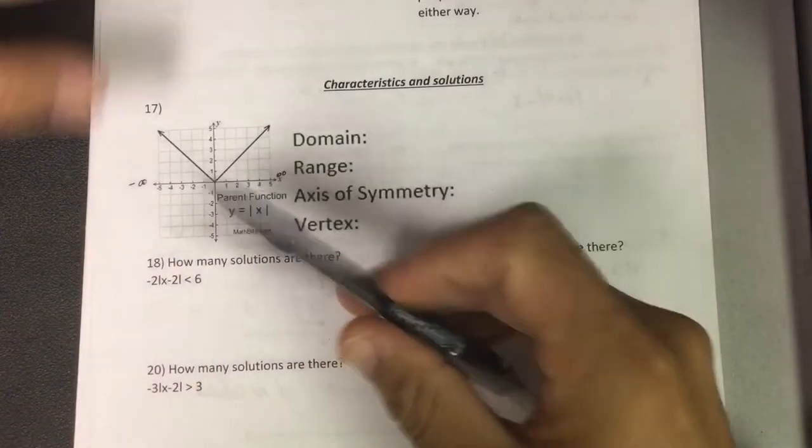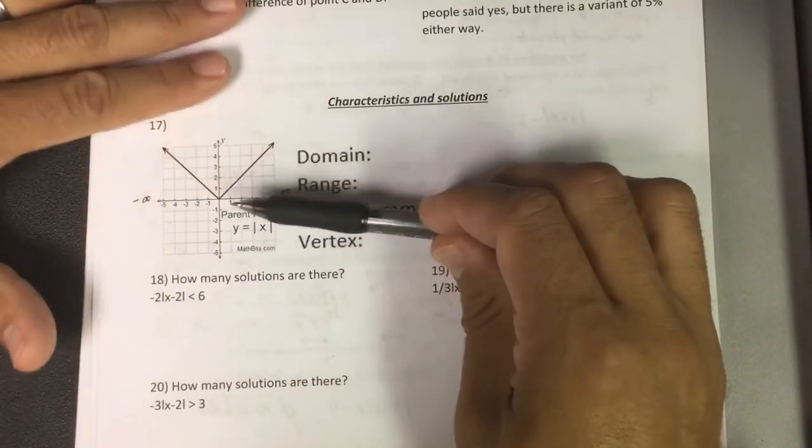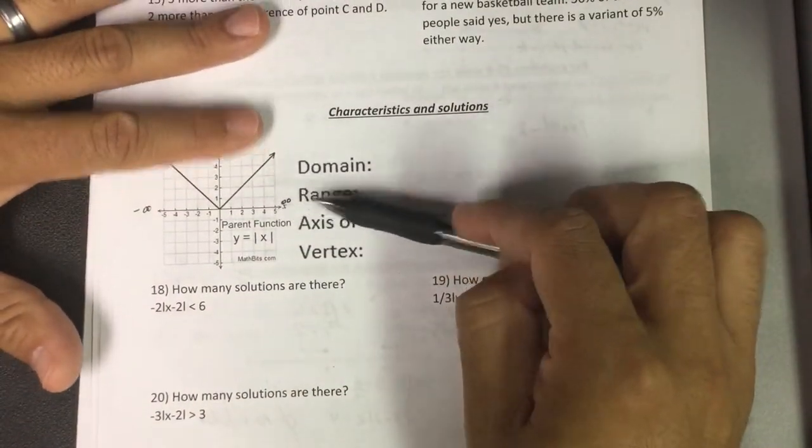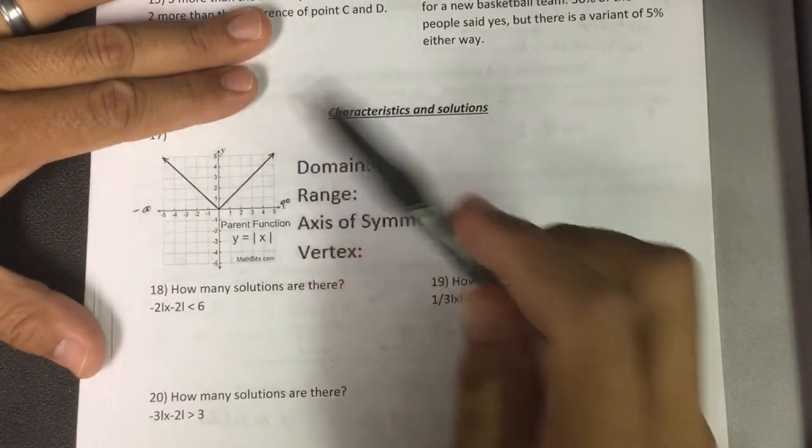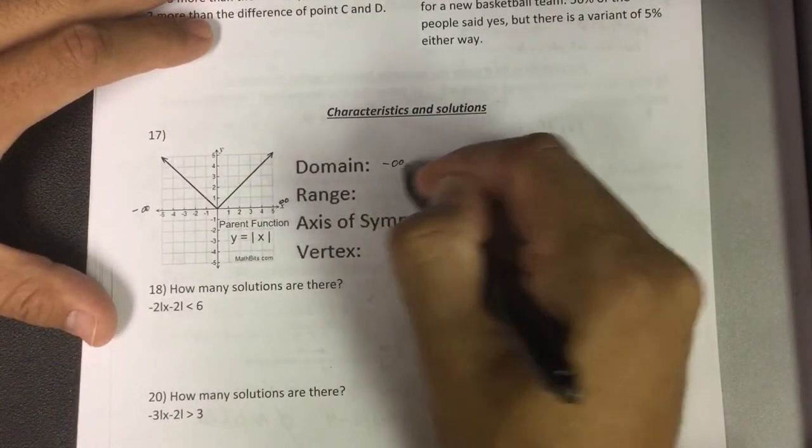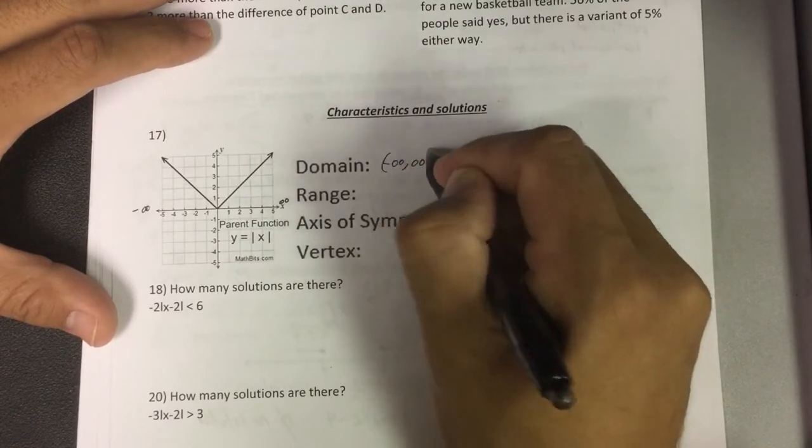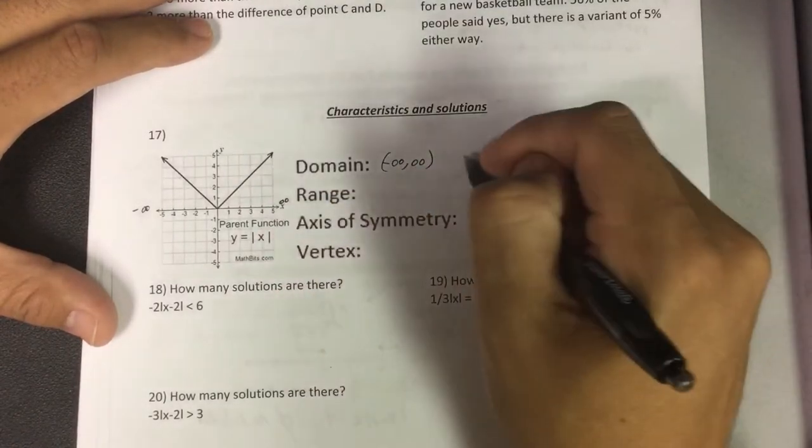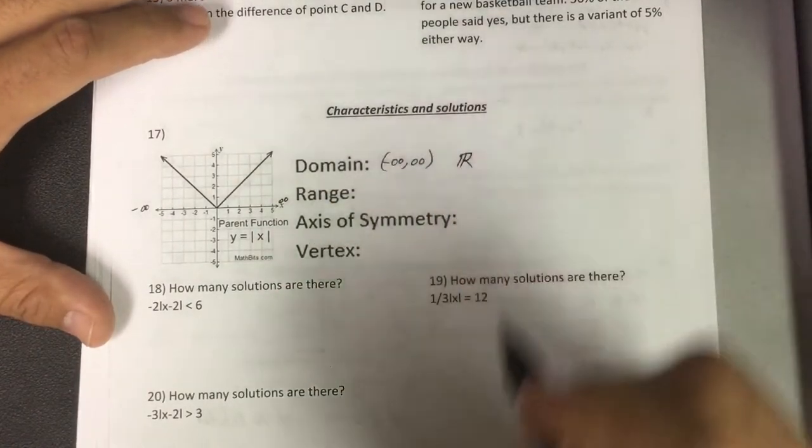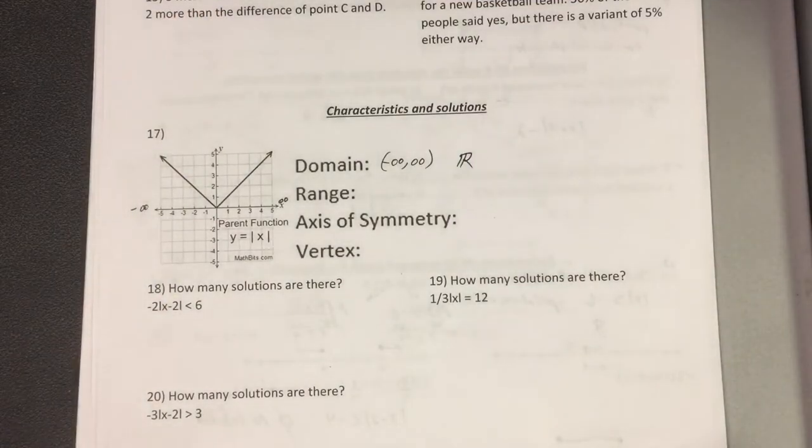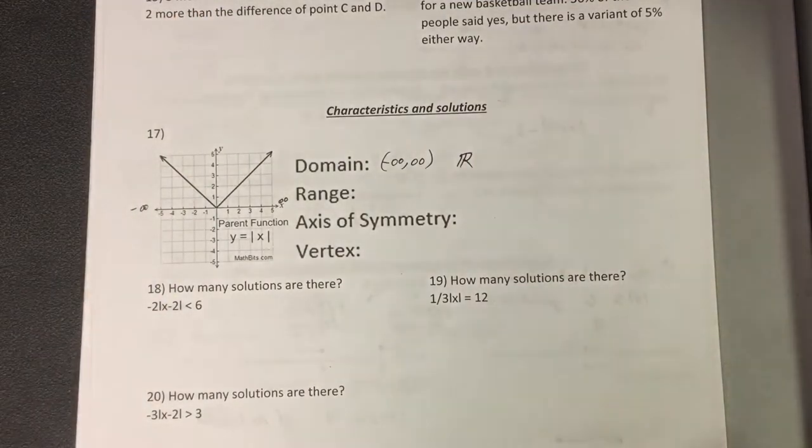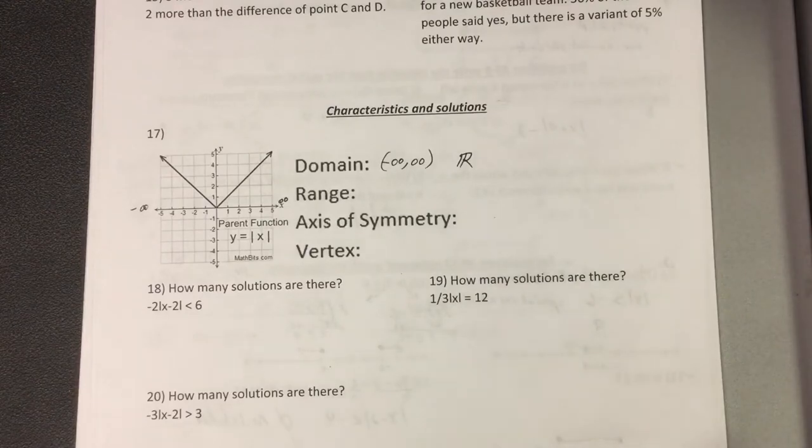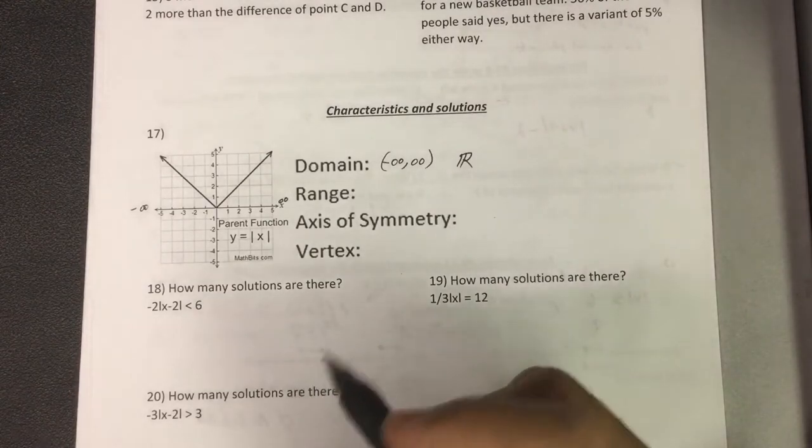The way we talked about it was squashing this down to the x-axis. This would go down and have an arrow this way and an arrow that way. So this is negative infinity to positive infinity. I would also write the other way, all real numbers, just because they may ask you a different way on your test.